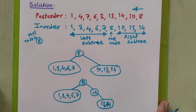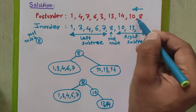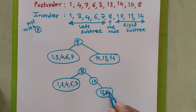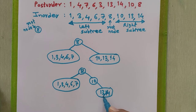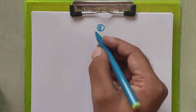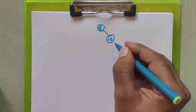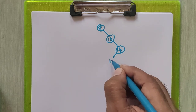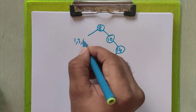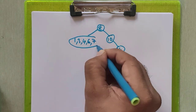Again we refer the post order sequence. After root node 10, the next node is 14. Checking the diagram, 14 does not have a right side element, so there is no right sub tree for node 14. But it has a left part with element 13, so 13 will go to the left sub tree of node 14. The remaining data 1, 3, 4, 6, and 7 stays as is.